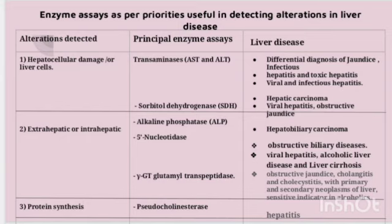Transaminases are also used for infectious and toxic hepatitis, including viral hepatitis. Sorbitol dehydrogenase is the next enzyme principally assayed to detect hepatocellular damage, used for diagnosis of hepatic carcinoma, viral hepatitis, and obstructive jaundice. For intrahepatic or extrahepatic alterations, the principal enzymes assayed are alkaline phosphatase, 5'-nucleotidase, and gamma glutamyl transpeptidase.